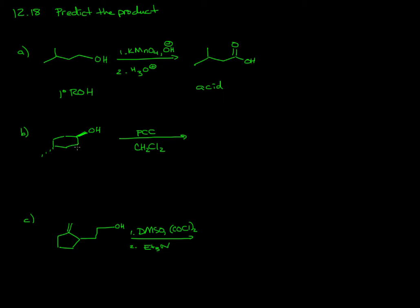Part B is asking us to treat a secondary alcohol in the presence of PCC and dichloromethane. So you'll need to recognize that PCC is pyridinium chlorochromate. CH2Cl2 is the solvent that the reaction is run in. This is a non-participating chemical in this reaction.